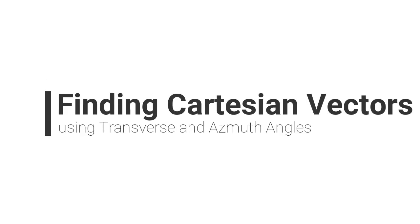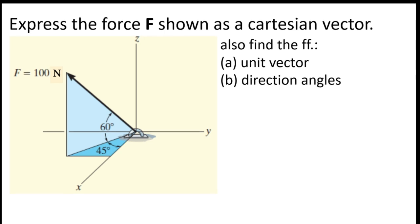Good day everyone. We will now solve the problem from our previous discussion. Express the force F shown as a Cartesian vector, and we are also going to find the unit vector and direction angles, since the magnitude of the force is given. The angles 45 and 60 degrees are given. As you can see, these angles are not part of the direction angles.